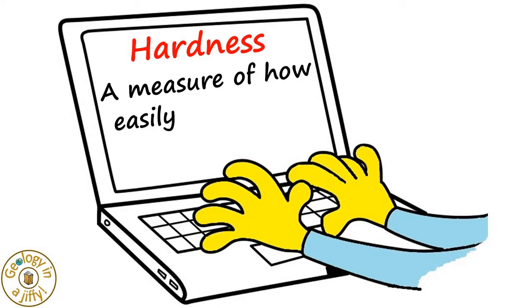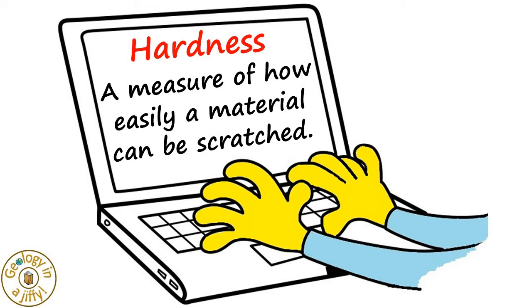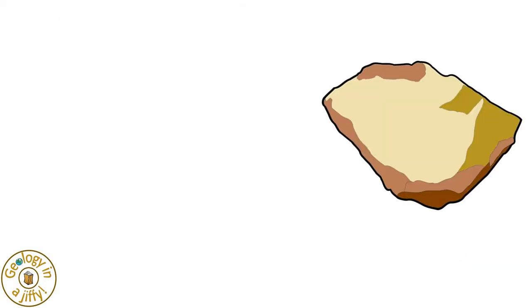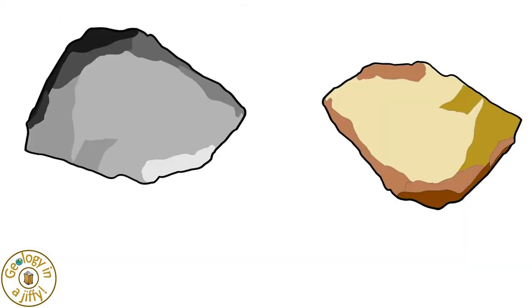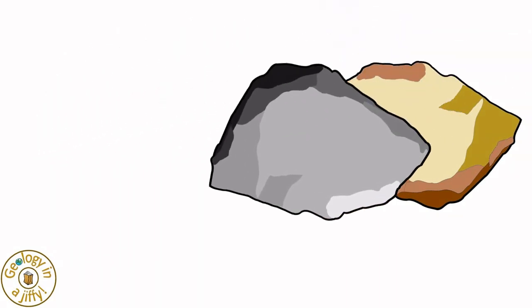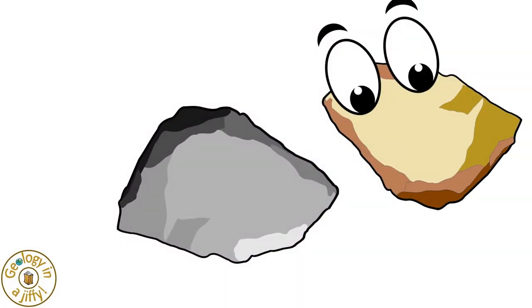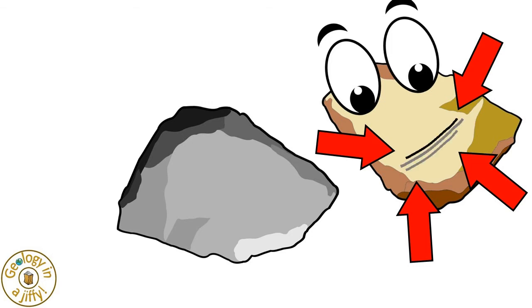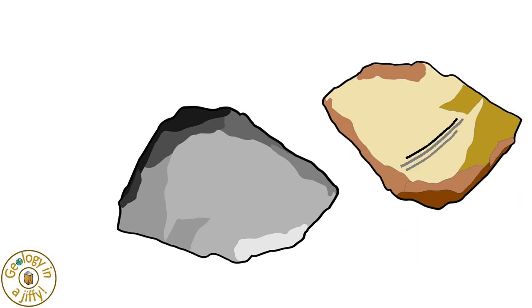Hardness is a measure of how easily a material can be scratched. If we take this brown colored mineral and then this grey colored mineral and rub the grey mineral across the brown mineral, when we look at the brown mineral we see it has a scratch across it, meaning the grey mineral was relatively harder when compared to the brown mineral.